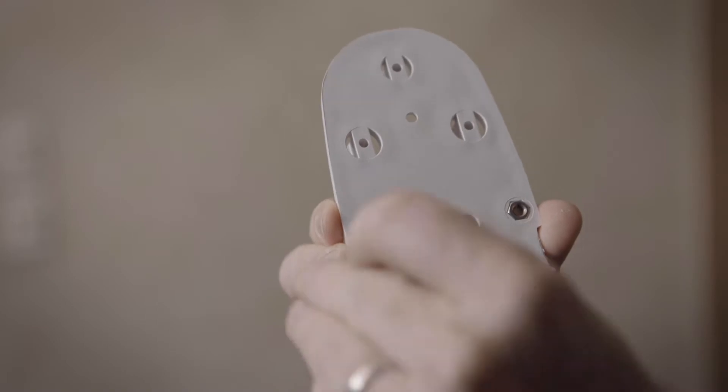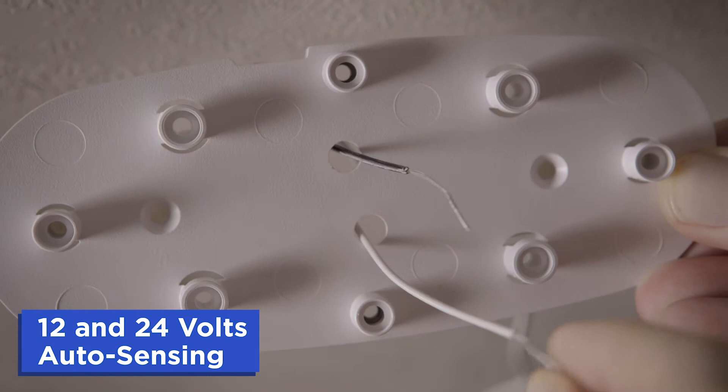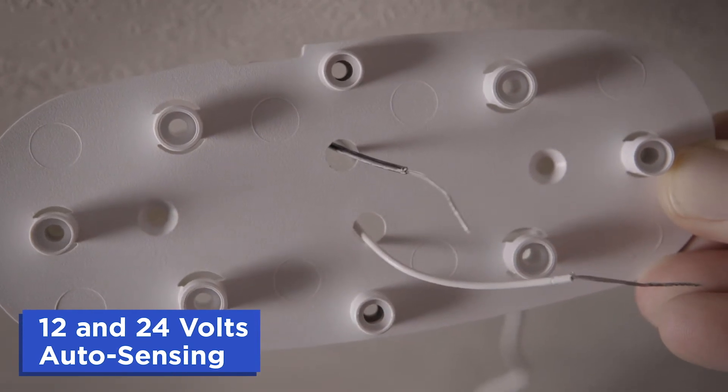Place two nuts in the hex holes on the back of the backing plate before mounting. Feed the positive and negative wires through the back plate before securing to the mounting surface.